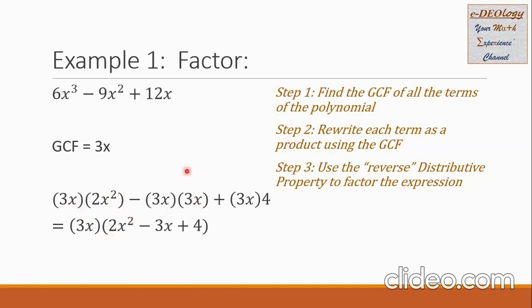For the second term, after removing the GCF, only 3x remains — so this is minus 3x. And then plus. For the third term, after removing the GCF, only the number 4 remains, so we write 4.